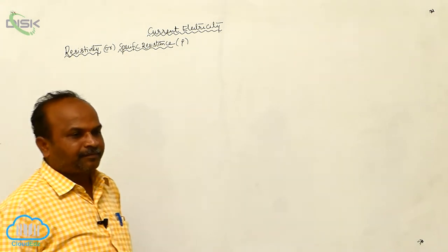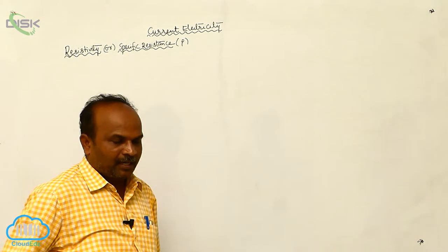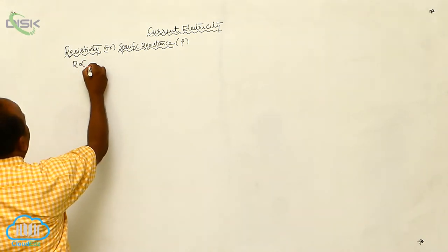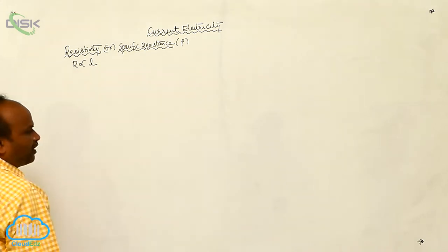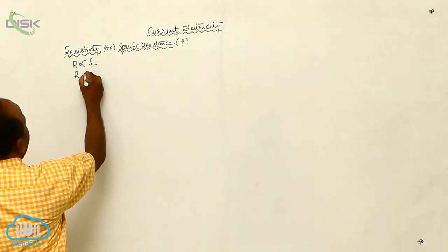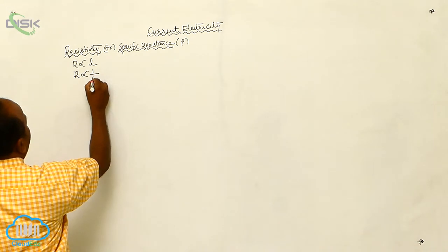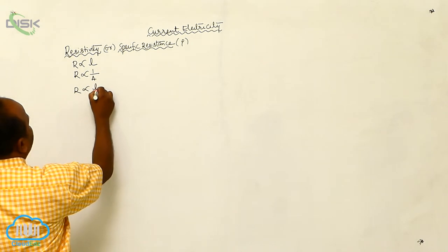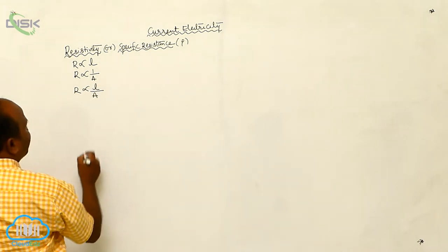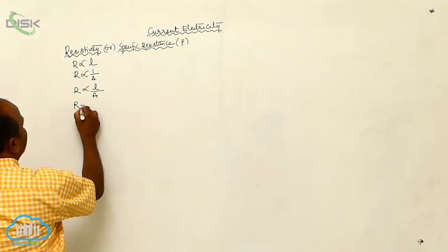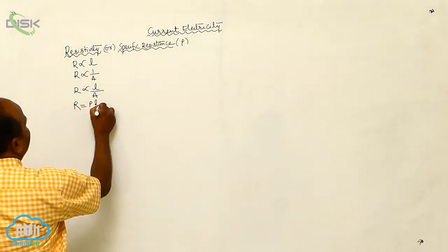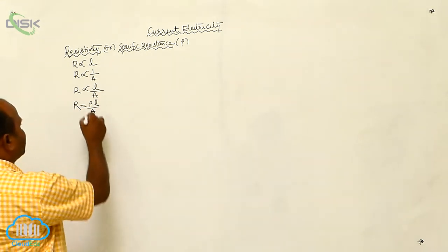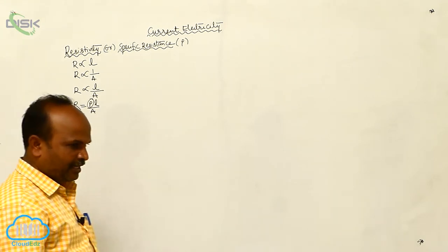According to the first law of resistance, resistance is directly proportional to length. According to the second law of resistance, resistance is inversely proportional to cross-sectional area. On combining both, resistance is directly proportional to L by A. Therefore, resistance equals rho into L by A, where rho is called the proportionality constant.